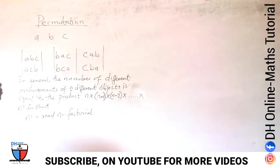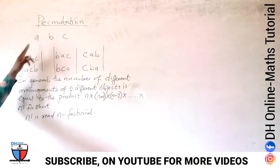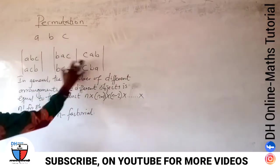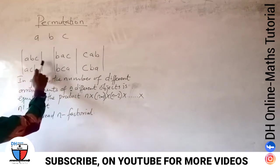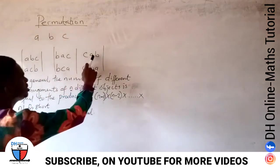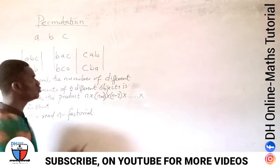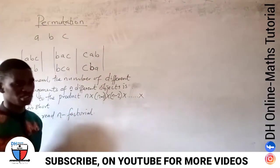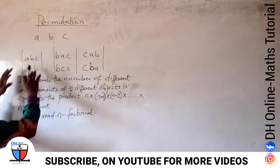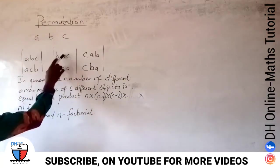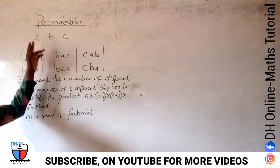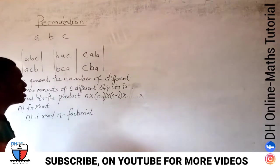Let's say for example I have an object ABC. Looking at this, I have arranged it — you can see ABC, ACB, BAC, BCB, CAB, and CBA. That tells you this object can be arranged in how many places? One, two, three, four, five, six — that is six places.